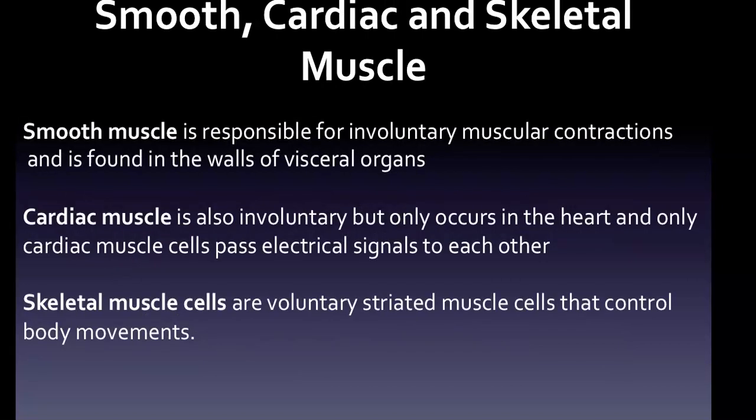Before we jump into smooth, cardiac, and skeletal muscle, the functional characteristics of muscle involved in carrying out various functions are contractability, elasticity, excitability, and extensibility. Muscles only do work when they contract — they do not actively push things further apart. Muscle cells contract and exert a pulling force.